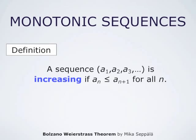We say that a sequence a1, a2, a3 and so forth is increasing if a_n is less than or equal to a_{n+1} for all n. We say that a sequence is strictly increasing if we have strict inequality between a_n and a_{n+1}.